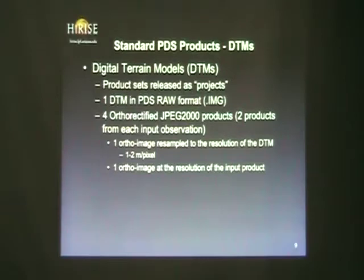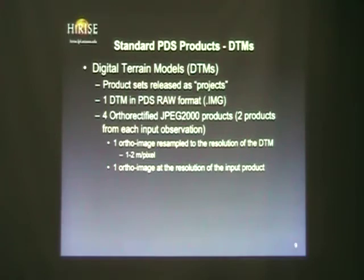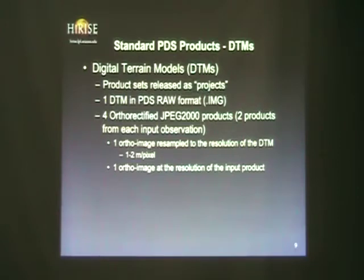In addition to our RDRs, we are producing DTMs from stereo pairs. Similar to the way HiRISE does their stereo pairs, we take two different images of the same place on two different orbits and merge them together to form a DTM. The products are released as sets — there's a DTM, and we release up to four different ortho-rectified images that are the source input images into the stereo pair that was used to create the DTM.